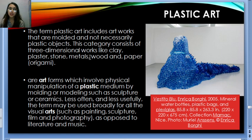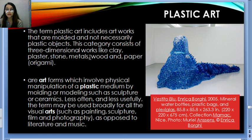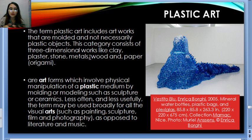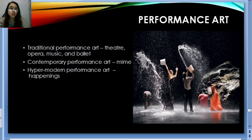Next is plastic art. The term plastic art includes artworks that are molded — not necessarily plastic objects. This category consists of three-dimensional works like clay, plaster, stone, metals, wood, and paper. I have here an example — Vestito Blue, a 2005 art piece created with mineral water bottles and plastic bags by Enrica Borge. It forms sustainable physical manipulation of a plastic medium by molding or modeling, such as sculpture and ceramics.